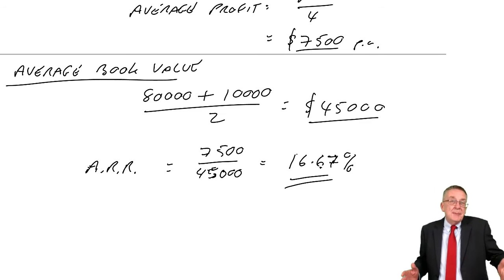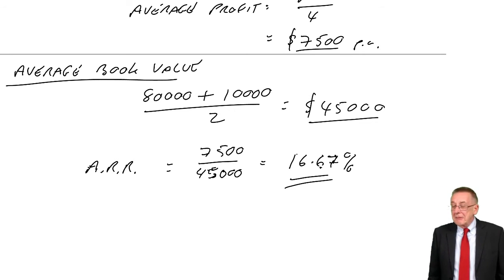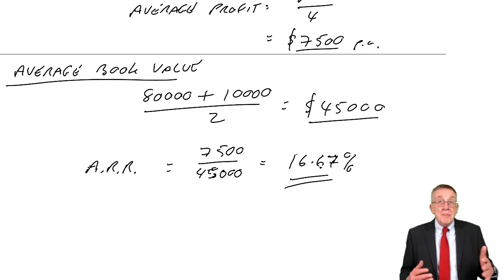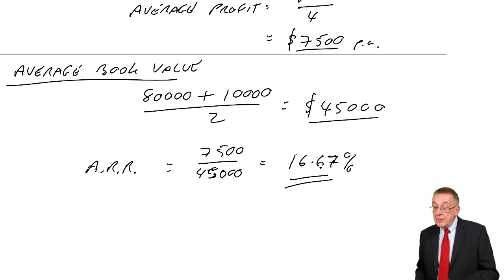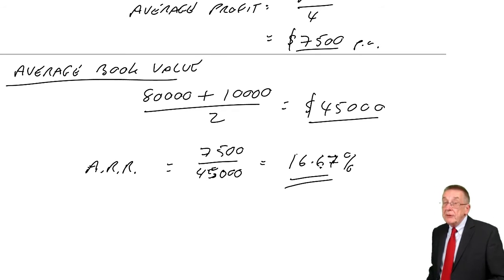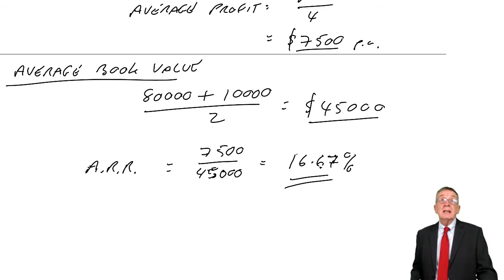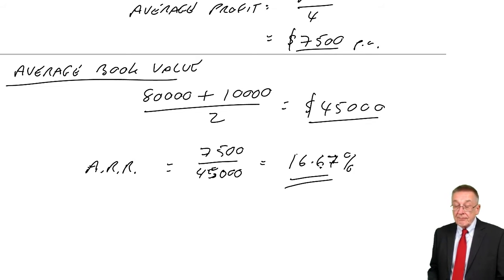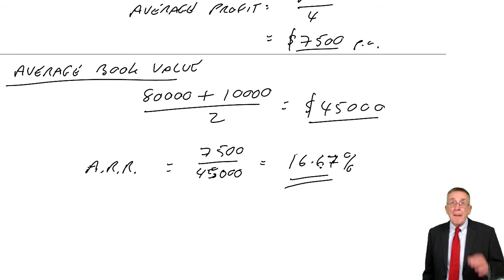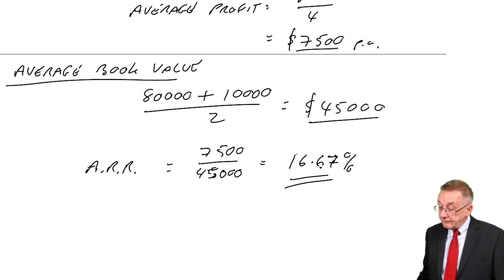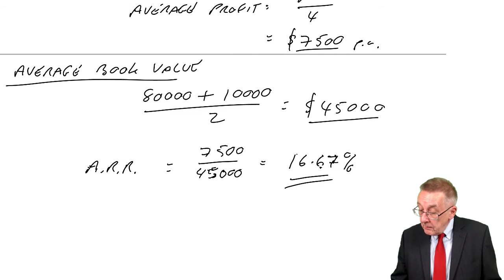Overall, if the business is getting a 10% return, this is more than that so it looks good. On the other hand, if at the moment they're getting an overall profit return of 20%, then perhaps we reject this at 16.7%. So you'd compare it with a target in deciding whether to go ahead or not. Anything on accounting rate of return would be pretty simple in the exam — primarily we look at discounted cash flow, but just to be safe, be aware of it.